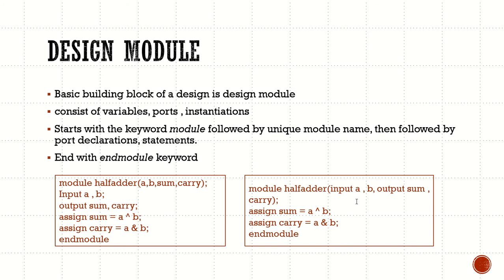In one style you directly declare ports as inputs and outputs in the header. You should not mix both styles — do not mention the port names in the header and then again declare them as inputs and outputs separately. These are just different versions: the second style is the new version and the first is the old version.